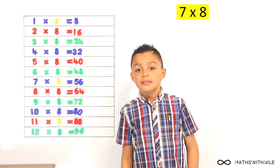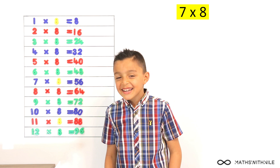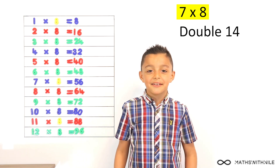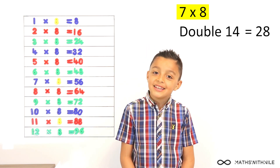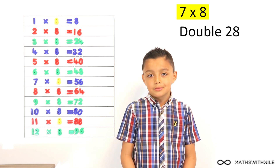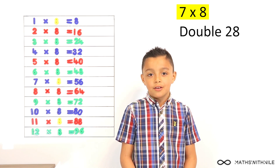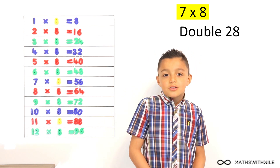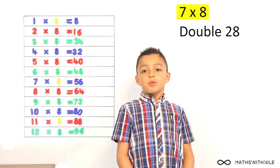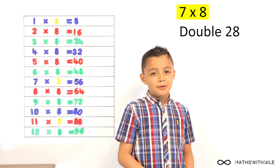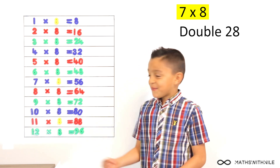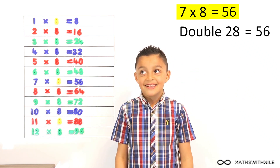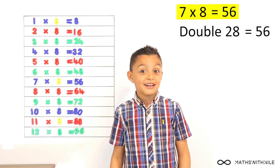Let's try 7 times 8 using that method. Double 7 equals 14. And then double it again — 28. Now, how are you going to double 28? Double 8 and double 20. So double 8 equals 16 and double 20 equals 40. So 52? 56. 40 plus 16 — this method is really not meant for me.